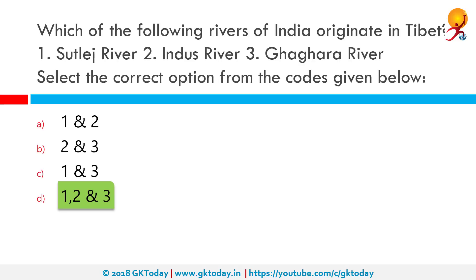The Indus runs a course through the Ladakh district of Jammu and Kashmir, then enters Pakistan via the northern areas of Gilgit-Baltistan, flowing in a southerly direction along the entire length of Pakistan to merge into the Arabian Sea near the port city of Karachi in Sindh.